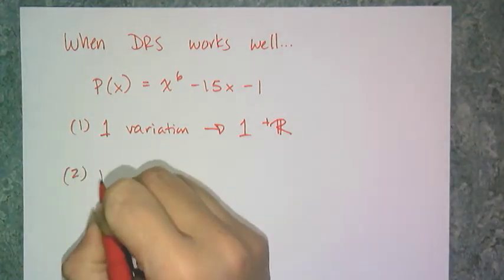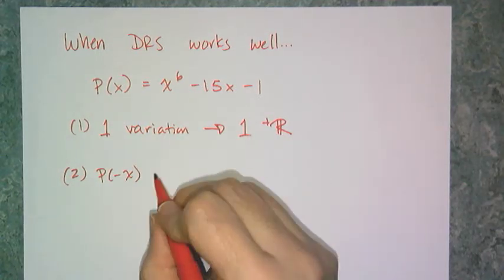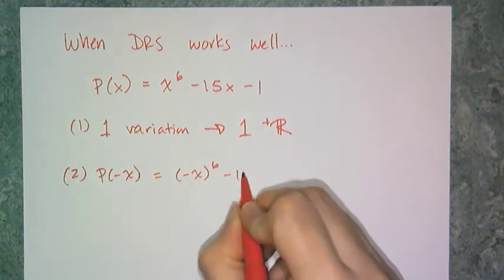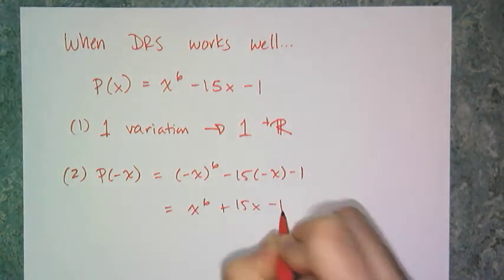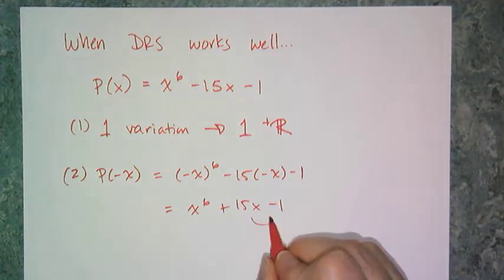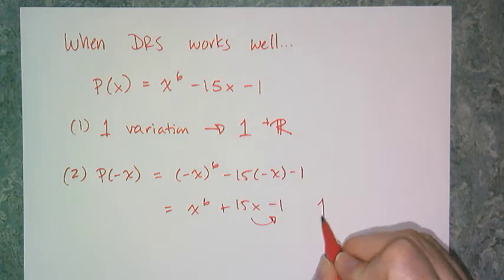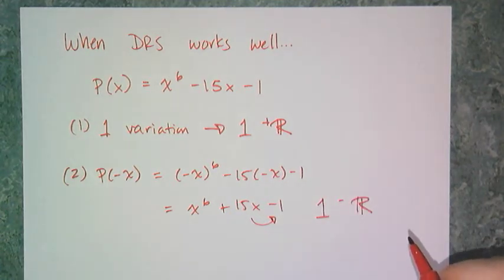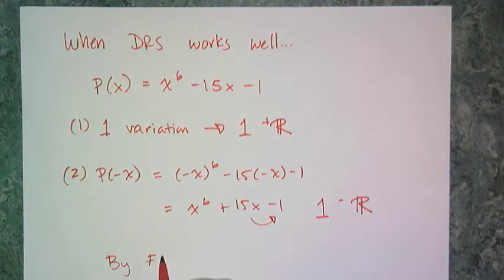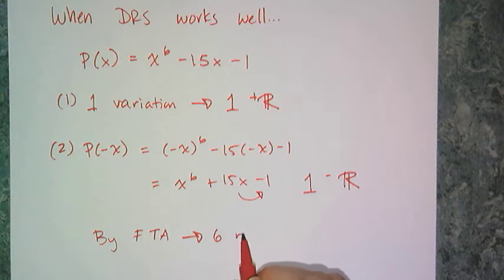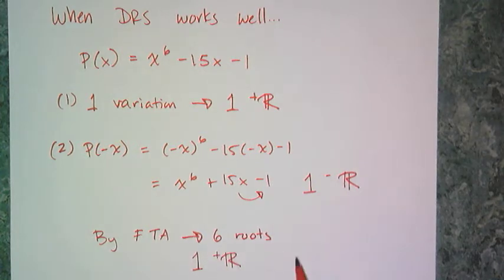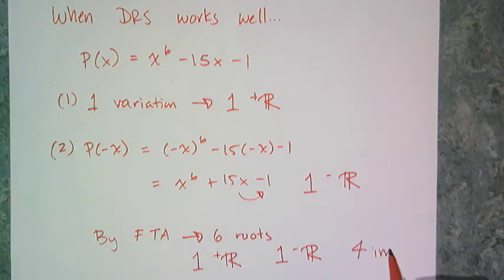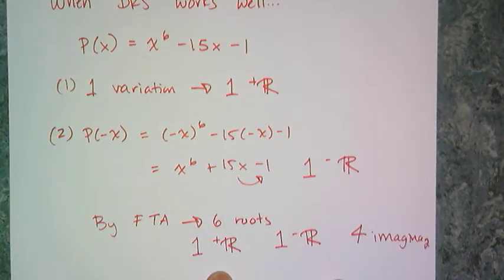Part 2 says I have to find the variation of sign of p(-x), so I replace x with its opposite, simplify the signs, and I look at the variation of sign — of which I have 1 — which means I have 1 negative real root. By the fundamental theorem of algebra, I know this polynomial has 6 roots total: 1 positive real, 1 negative real, so the other 4 have to be imaginary.